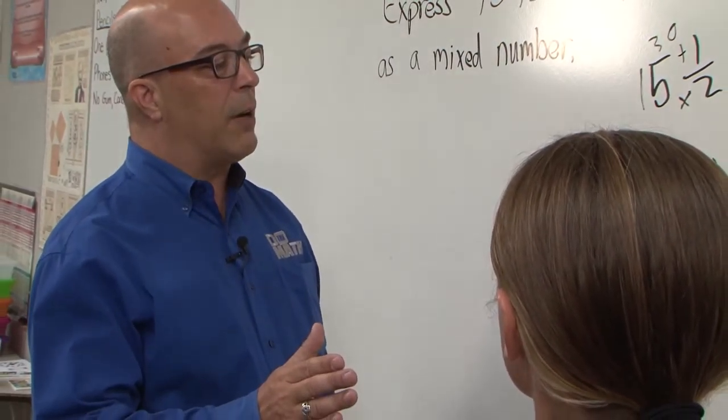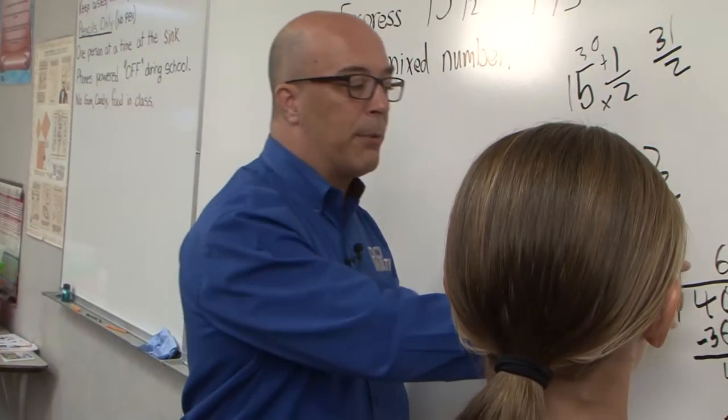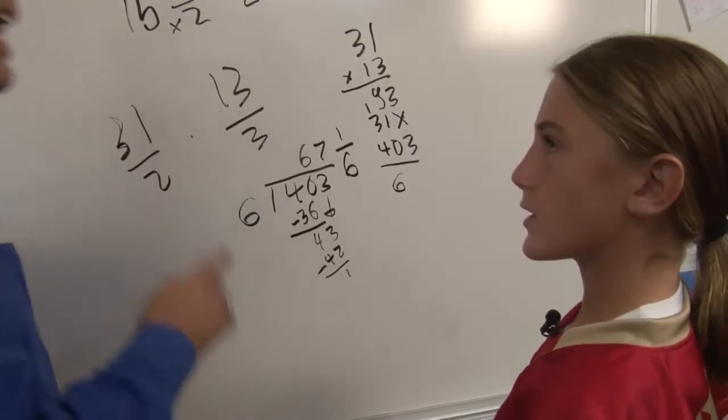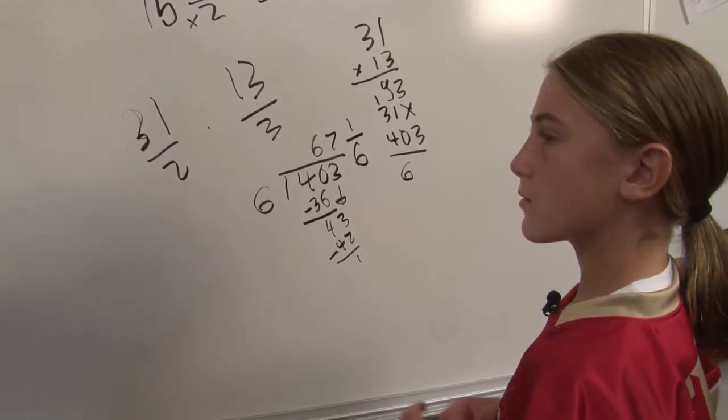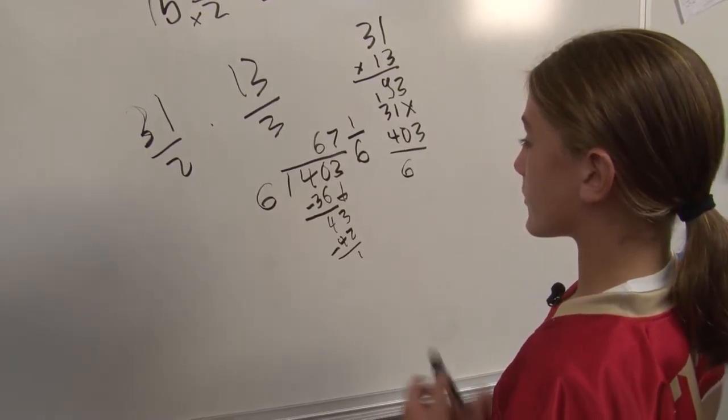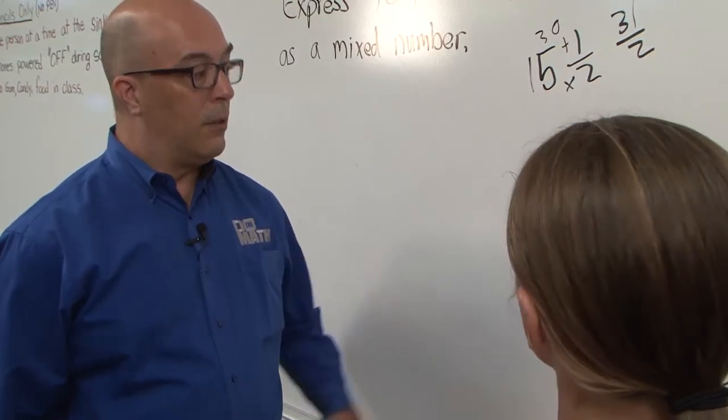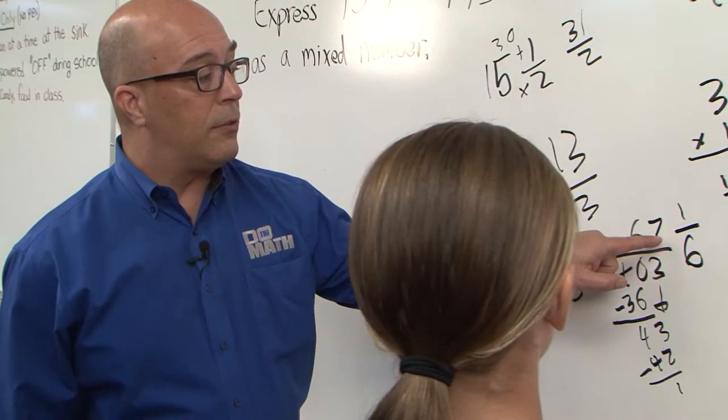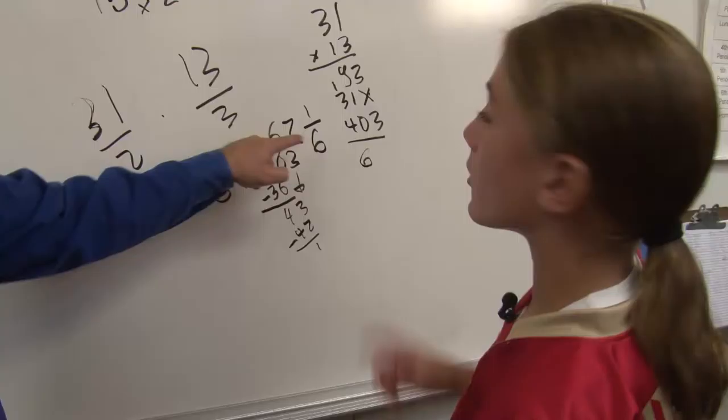Exactly. That is perfect reasoning why you do that. Now, how can you, because you would come up with 67 and 1 sixth. Yes. How do you know that is the correct answer? Is there a way to check that? To check that, you could do your math again, or... You could, or you could just do this process again, right? Oh, yes.